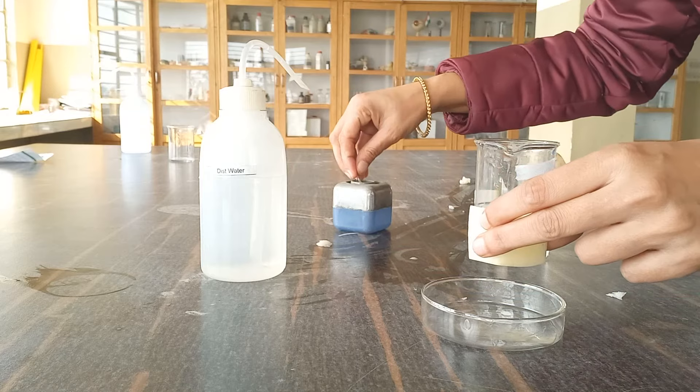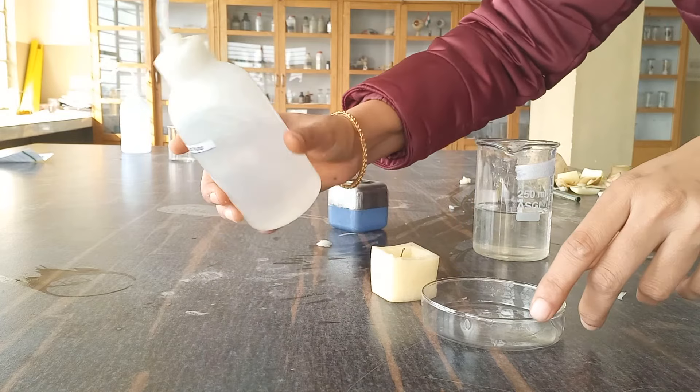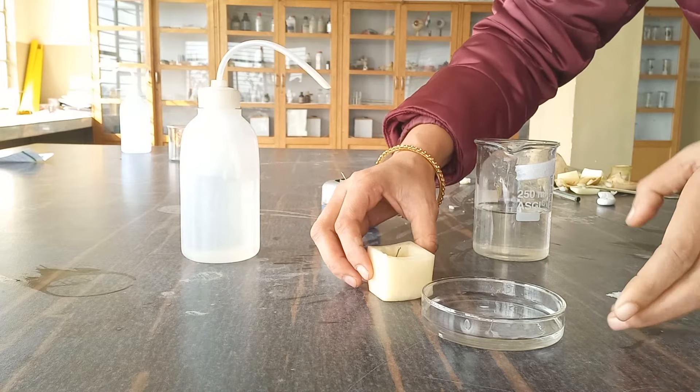And then we are going to mark with the help of this all pin to the level of this particular sugar solution. In this way we are going to mark it. And then we are going to put water in this petri dish. It must be half filled so that the base can be easily dipped into it.